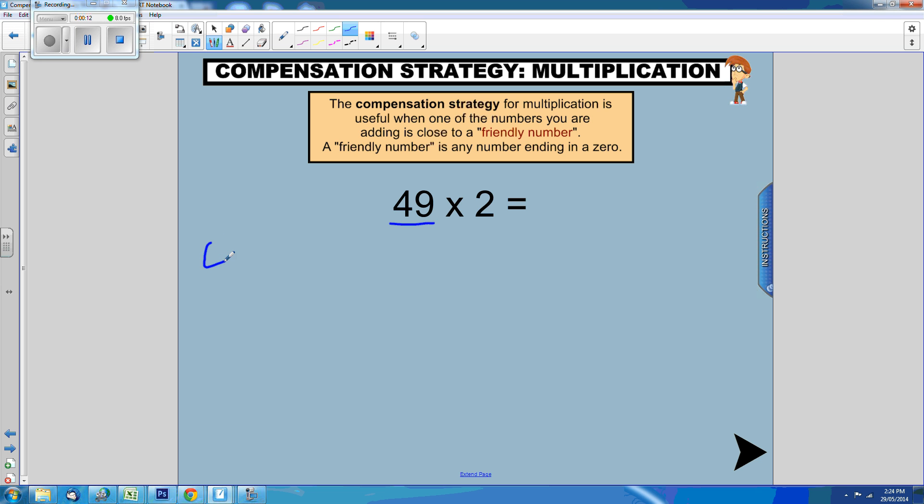If we add 1 to 49, we'll get 50. Now that we have the friendly number, we can multiply it by 2. 50 times 2 equals 100.